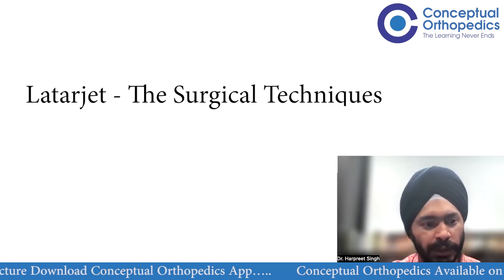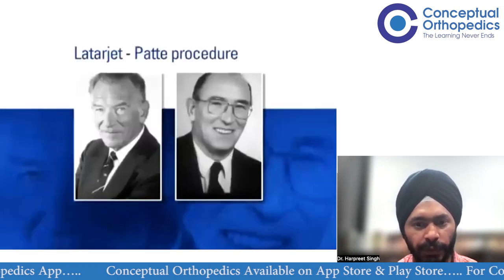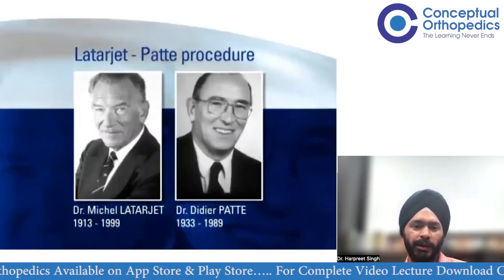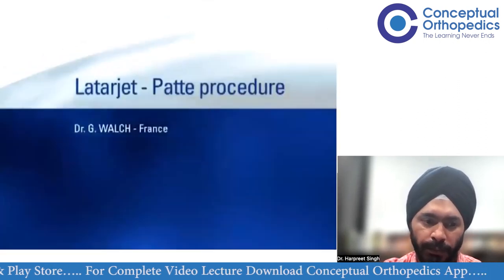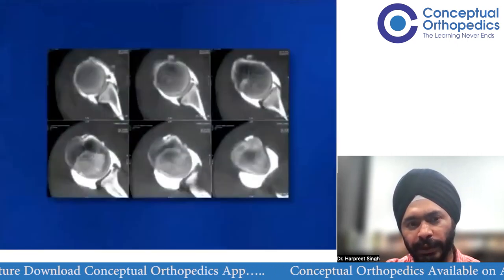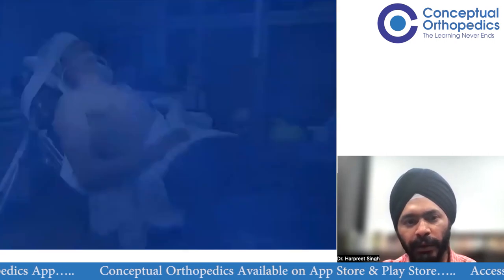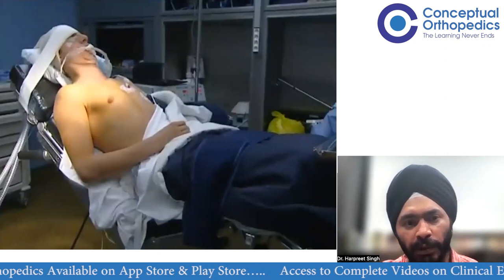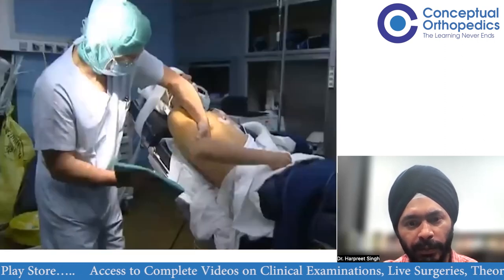Grateful to G. Walsh for this video — this is the Walsh Latarjet, and Patte originally described this surgery. Walsh always does his primary X-rays and CT; this is a CT arthrogram, but we usually follow MRI and dual CT to calculate the glenoid bone loss.